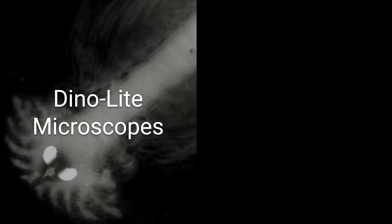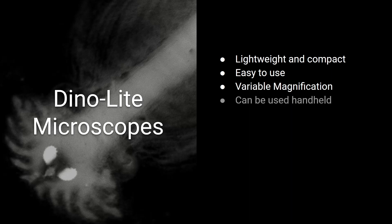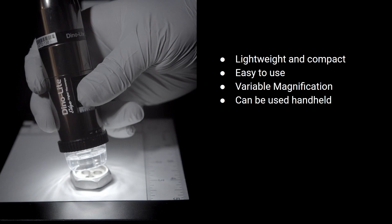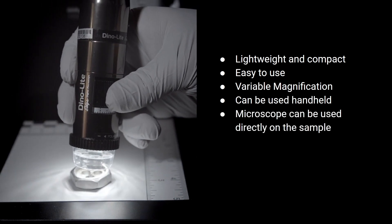On the other hand, Dynalight Digital Microscopes are light and compact and are easy to store. They're extremely easy to use and to train people to use, and since they have variable magnification, you can work in a range of magnifications without changing lenses. Since Dynalight Microscopes are so small, they can easily be used handheld, and they can be placed directly on the surface you're wanting to inspect.